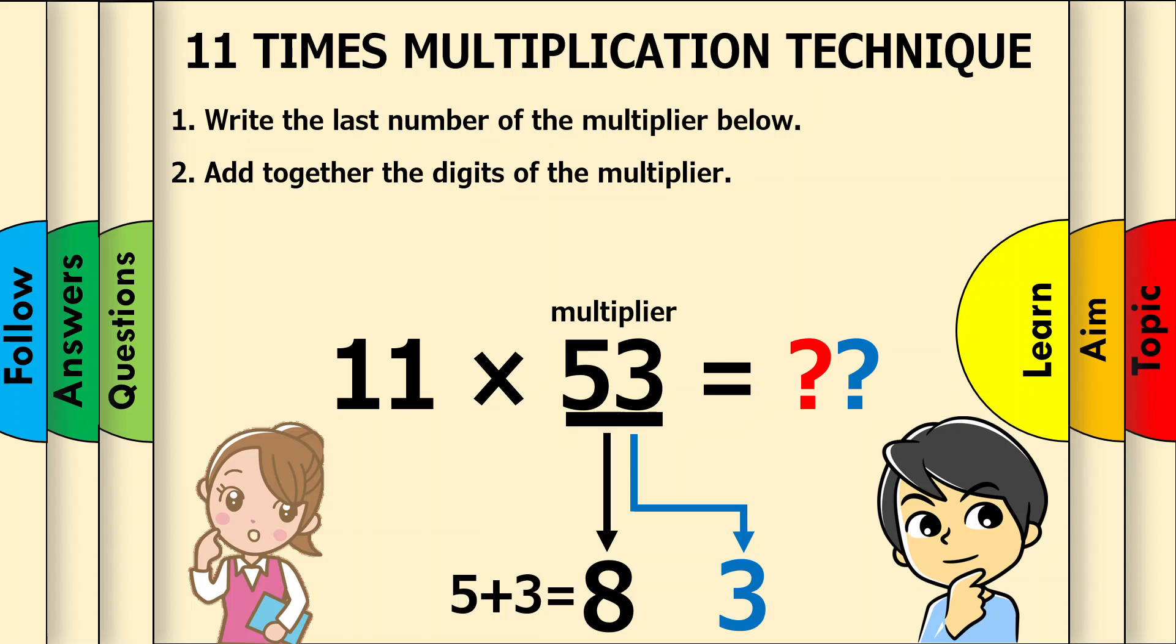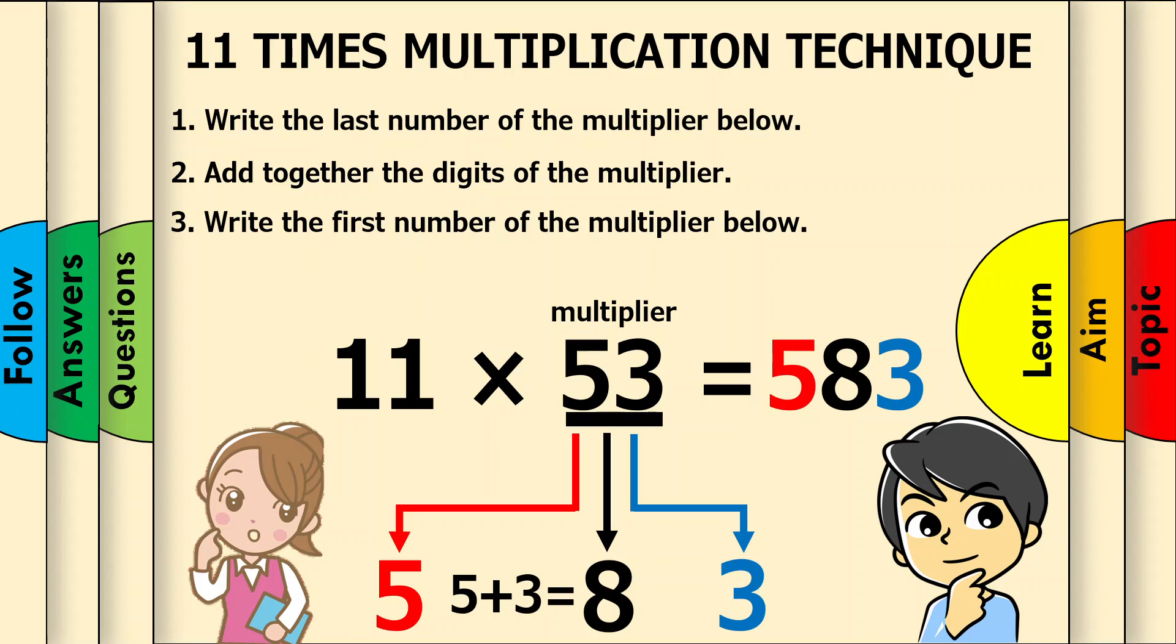Finally, write the first number of the multiplier below. The first digit is 5, so put that underneath. Well done. We have an answer. So simple, right?